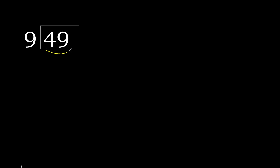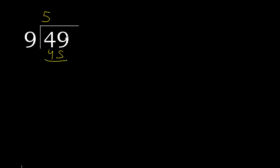49 divided by 9. 4 is less, therefore next 49. 49 is not less, so we take 49. 9 multiplied by which number is nearest to 49 but not greater? 9 multiplied by 6 is 54, which is greater. Multiplied by 5 is 45, which is not greater. 49 minus 45 is 4. Next.